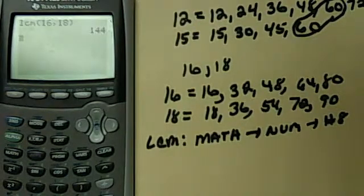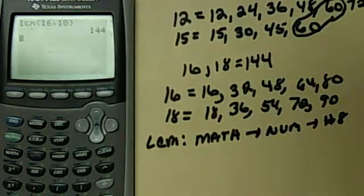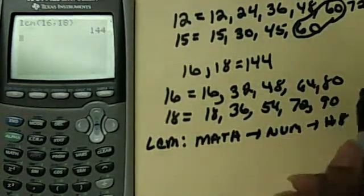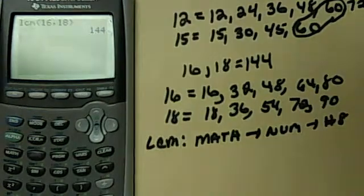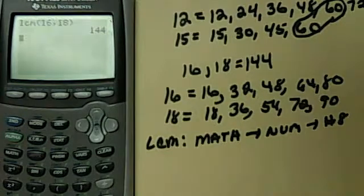And then you have 144. So the LCM between 16 and 18 is 144. As you see, I would have had a long way to go until I got to 144. So that's why we want to use our calculator to make this the most expeditious process possible.